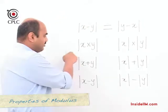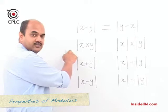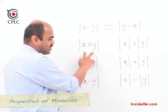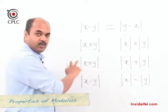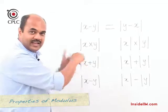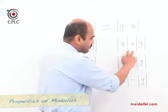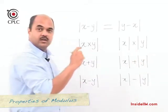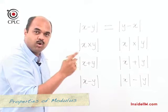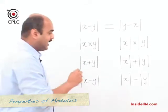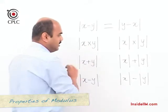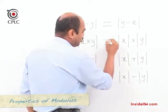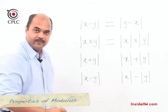Similarly, when we look at mod of (x multiplied by y) and split it as mod x multiplied by mod y, once again whatever the individual values of x and y, these two are always equal.